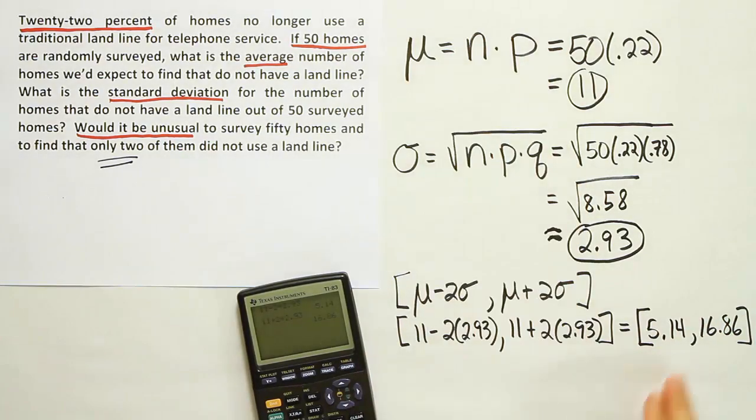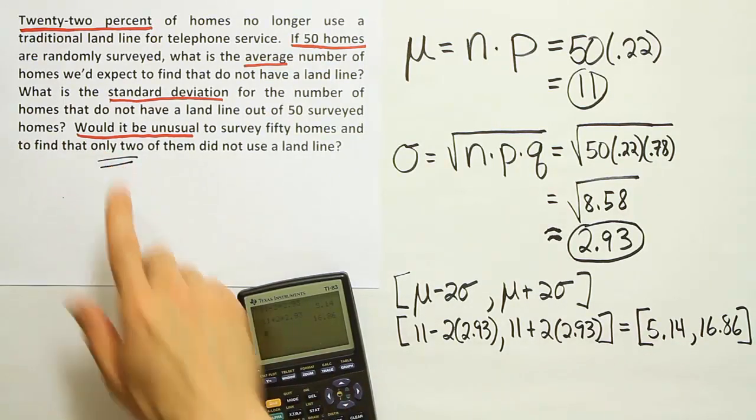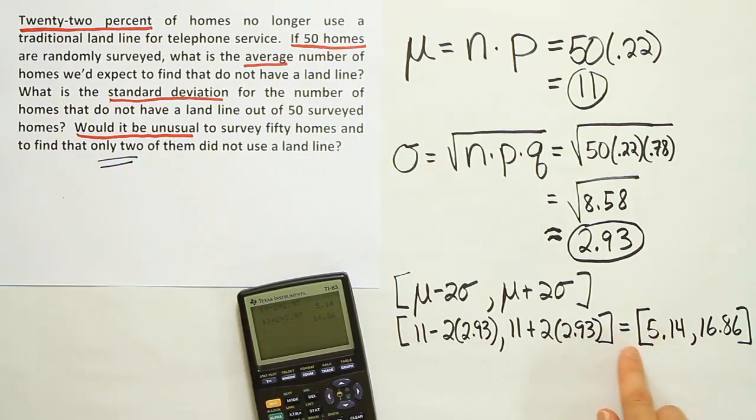When you survey 50 homes, you might find as little as six or as high as 16 homes that don't have a landline 75% of the time. But to get only two that don't have a landline, two is outside of this interval. On the number line it would be below five. So it's outside of the interval. Anything outside of the interval we would declare as unusual. So in this case I would say it's unusual.